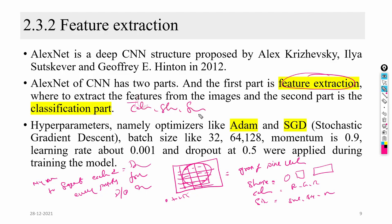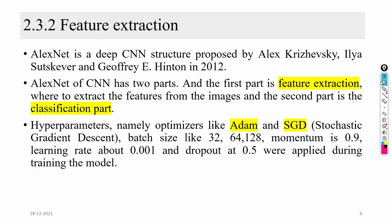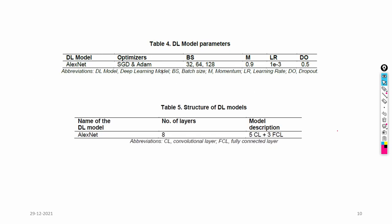Features extracted from the AlexNet model include color, shape, and size from images. Some hyperparameters used are: Adam optimizer, stochastic gradient descent, batch sizes of 32, 64, and 128, momentum of 0.9, learning rate, and dropout. These hyperparameters are applied during training, and the terminologies will be explained at the end of the lecture.